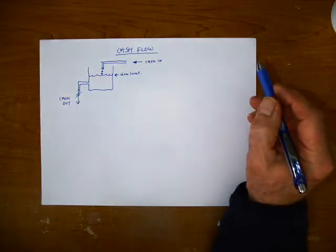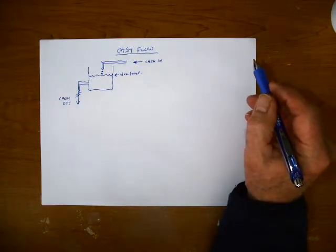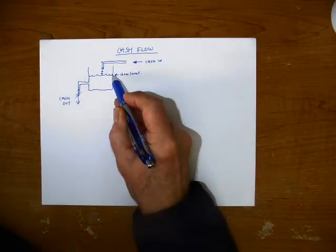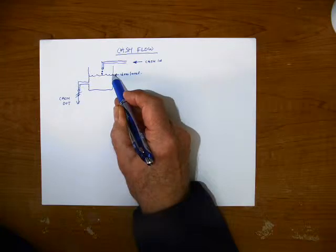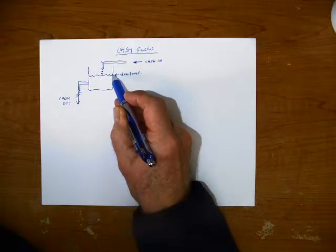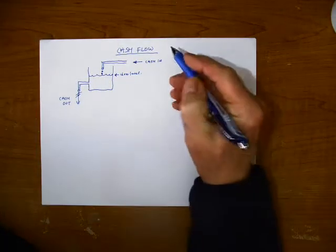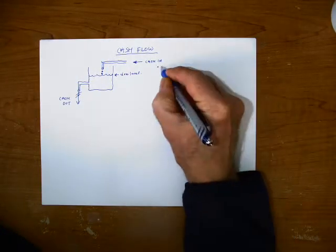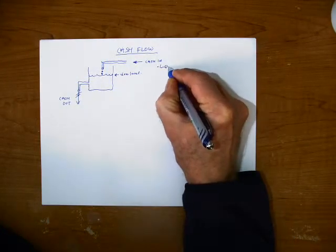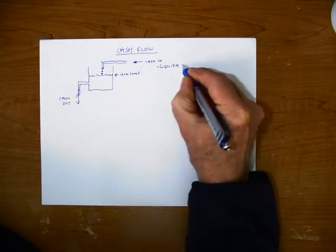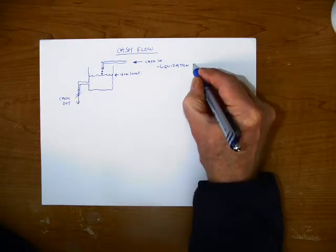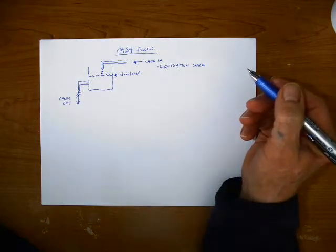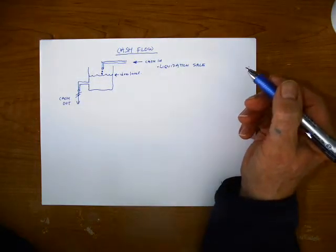Now let's talk about how we can bring in cash if the level starts to drop below this certain point. And remember, these have to be cash transactions. So let's say we could have a liquidation sale. Let's take some of the merchandise that's not selling and put it on sale and see if we can generate some cash that way.